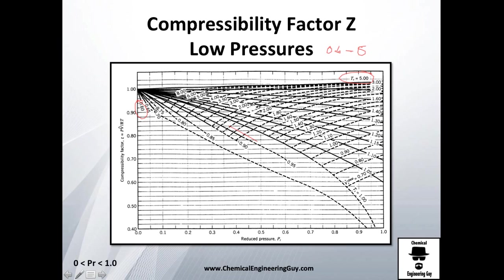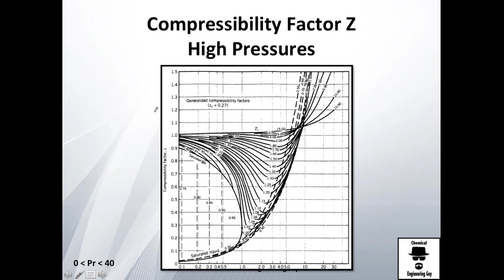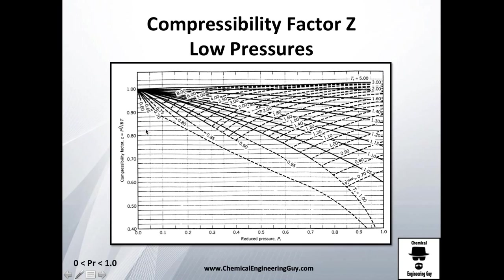Look, the reduced pressures are huge, from 0.1 to 30 reduced pressure. Reduced temperatures we have from 0.8 Tr until 15, which is huge. Yeah, essentially we have a lot of diagrams.